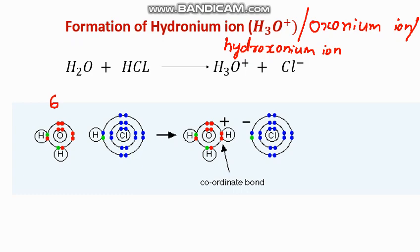To get the hydronium ion, a hydrogen ion is transferred from the chlorine to one of the oxygen atoms. Oxygen has two lone pairs, so this hydrogen ion comes in contact with one of the lone pairs of the oxygen atom, and thus we get the hydronium ion.